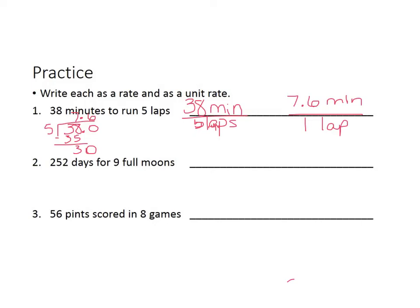Number two. 252 days for nine full moons. So the rate would be 252 days for nine full moons. Please remember that you put the full label on there so we know exactly what descriptions and what units we're comparing.